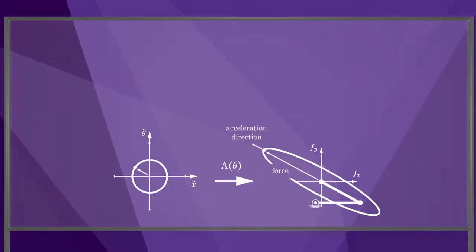First of all, the directions of the force and the endpoint's acceleration are only aligned if the force is aligned with the principal axis of the ellipse, as you see here. To accelerate the endpoint in this direction, you need a lot of force. To accelerate the endpoint in the orthogonal direction, you need much less force.